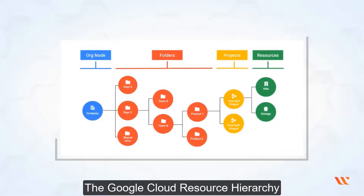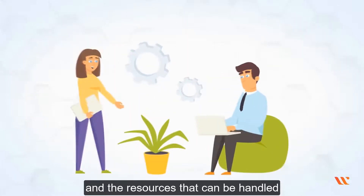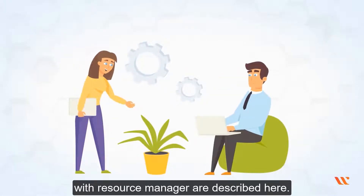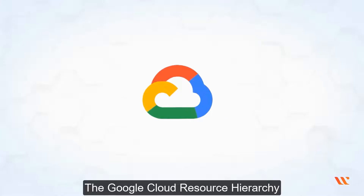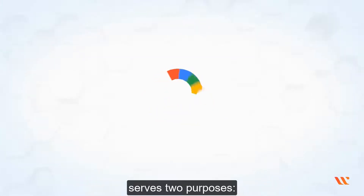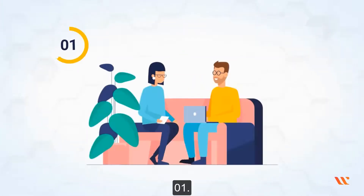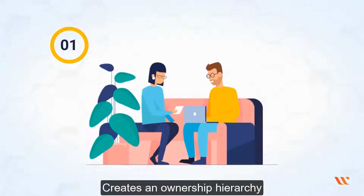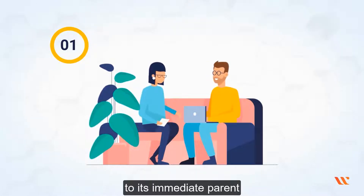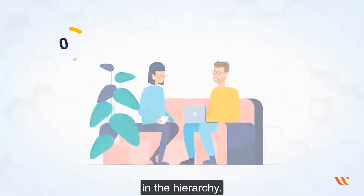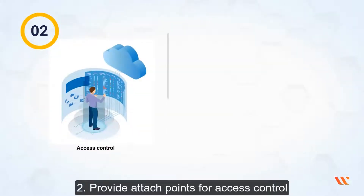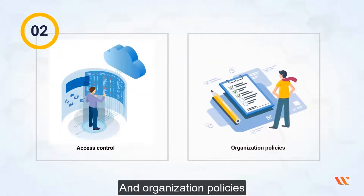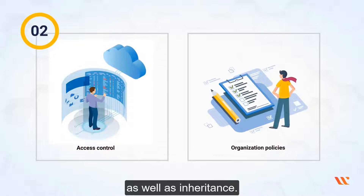The Google Cloud Resource Hierarchy and the resources that can be handled with Resource Manager are described here. The Google Cloud Resource Hierarchy serves two purposes: first, it creates an ownership hierarchy that ties a resource's life cycle to its immediate parent in the hierarchy; second, it provides attach points for access control and organization policies as well as inheritance.